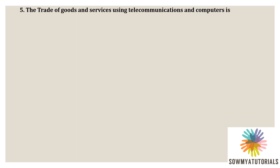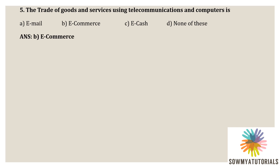The next question is: trading of goods and services using telecommunications, computers, and the internet is called what? Options: A) Email, B) E-commerce, C) Cash, D) None of these. The correct option is B) E-commerce. E-commerce is the buying and selling of goods and services over the internet.